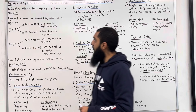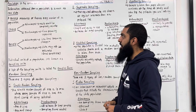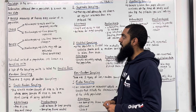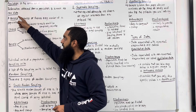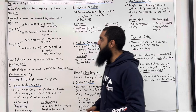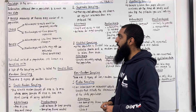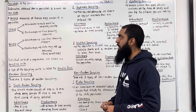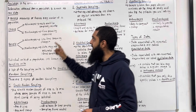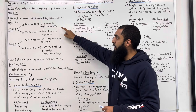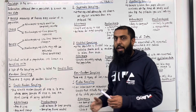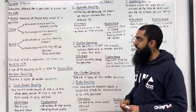Population is a whole set of items that are of interest. Information obtained from a population is known as raw data. A census measures or observes every member of a population. The advantage of using a census is that the results should be completely accurate, as every member of the population is considered.